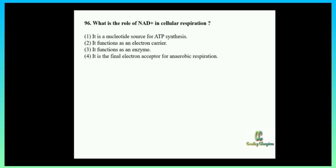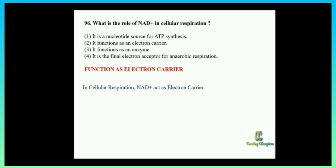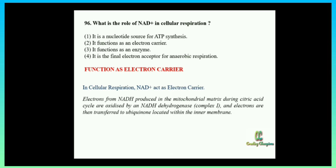The answer is: it functions as an electron carrier. In cellular respiration, NAD+ acts as an electron carrier. Electrons from NADH produced in the mitochondrial matrix during the citric acid cycle are oxidized by NADH dehydrogenase, and the electrons are transferred to ubiquinone located within the inner membrane. This is also directly given in your textbook.